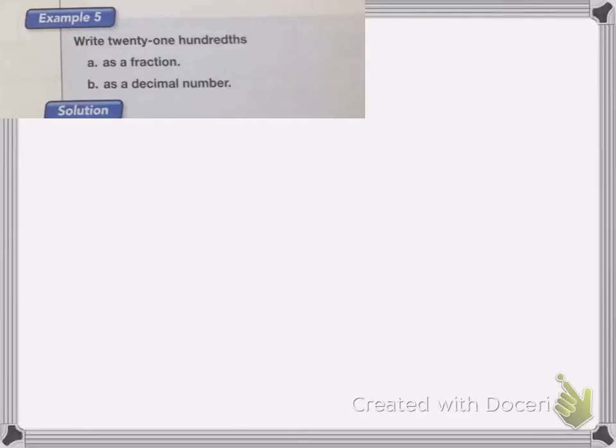So now the last question. It says write 21 hundredths as a fraction and as a decimal number. We're going to write it as a fraction first, it's a little bit easier.